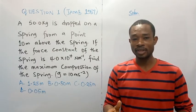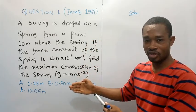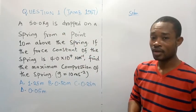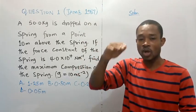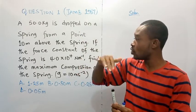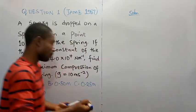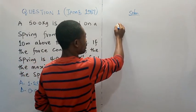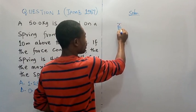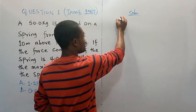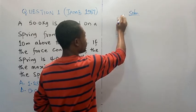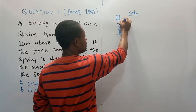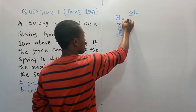To handle this problem, we need to know the parameters given to us in the question. We are told that a mass of 50.0 kg is dropped on the spring from a height 10 m above the spring. One can think of something like this. Let me just do a little sketch. Let's assume that this is the spring. And then, there is a mass dropped from a given height. The height from this to the spring is given as 10 m.